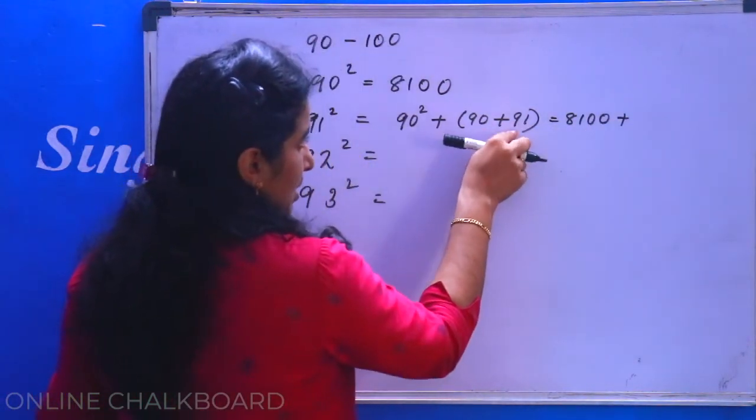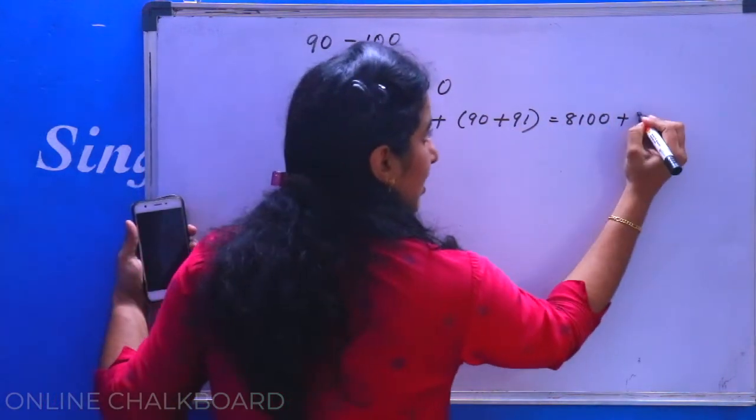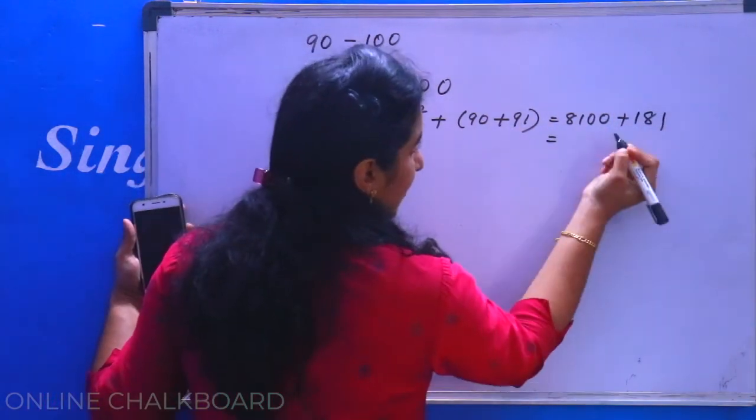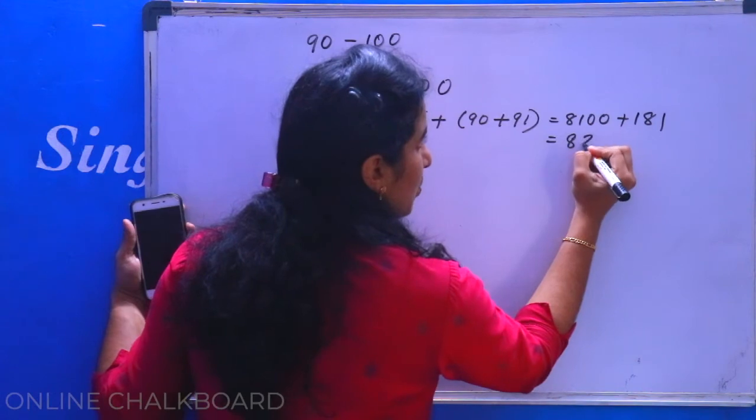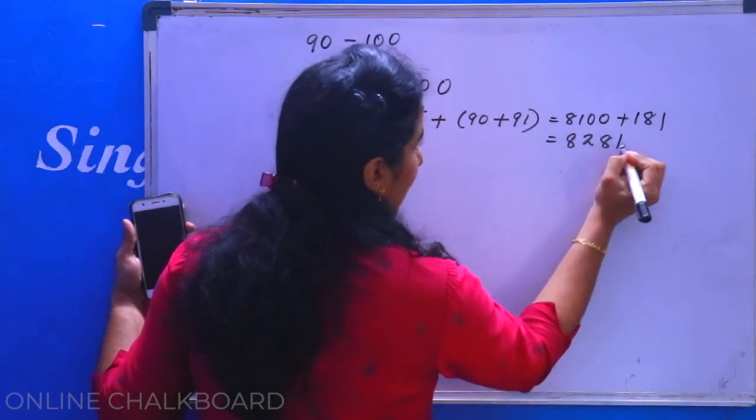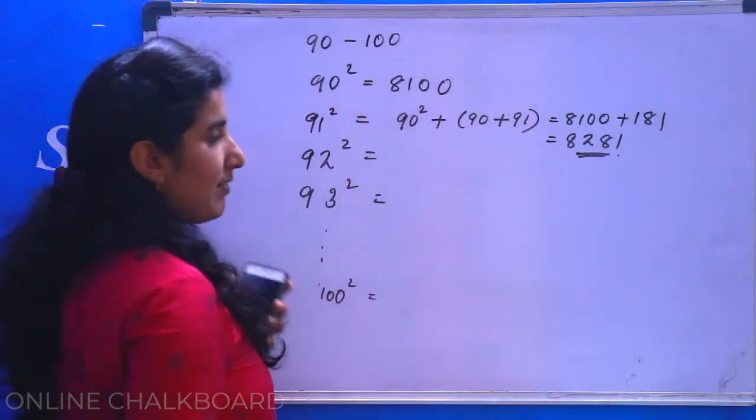Then we have 90 square plus 80. The answer is 8281.